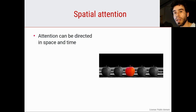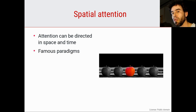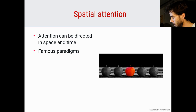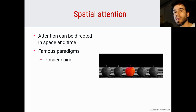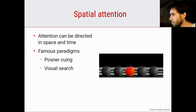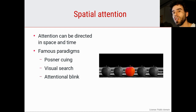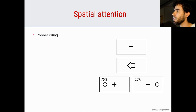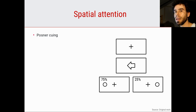Attention can be directed in space and in time, especially when we're talking about visual attention. We're going to take a look at a few famous paradigms — a paradigm is basically one very stereotyped psychology experiment. For example, the Posner cueing paradigm developed by psychologist Michael Posner. Visual search is a class of experiments in which participants have to search visually for one item among a larger set of other items. And we're also going to take a look at the attentional blink paradigm, which is used to study temporal forms of attention. Let's start with the Posner cueing paradigm.